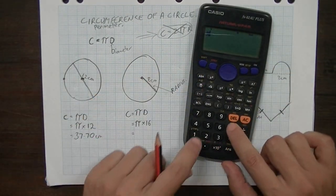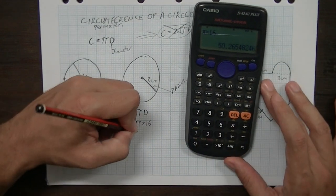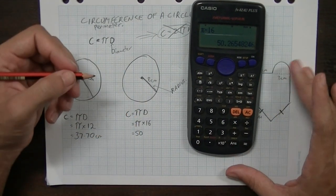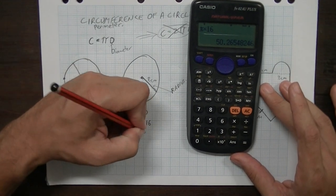Okay, same deal. Pi times 16. We get our answer 50.265. If I round that to two decimal places, it'll be 50.27.